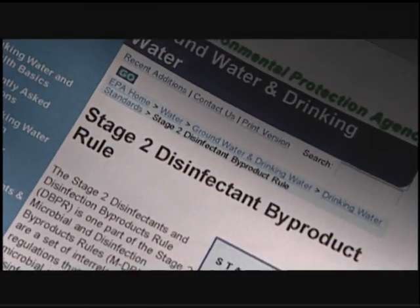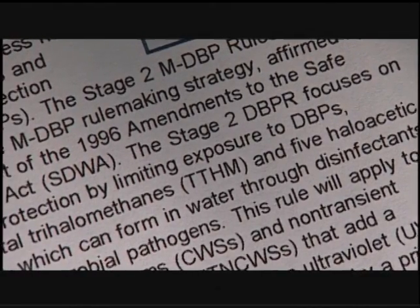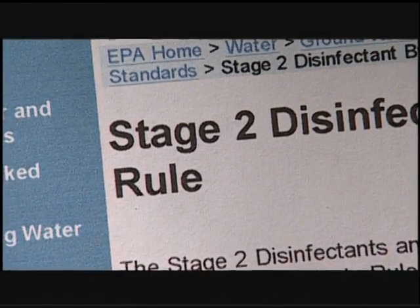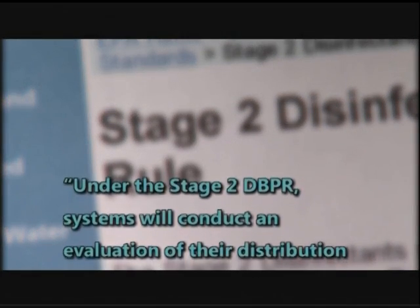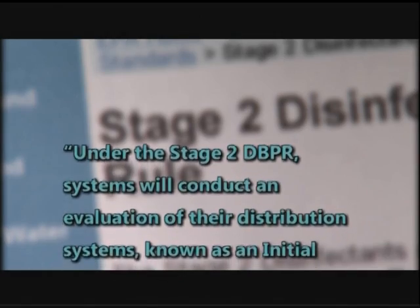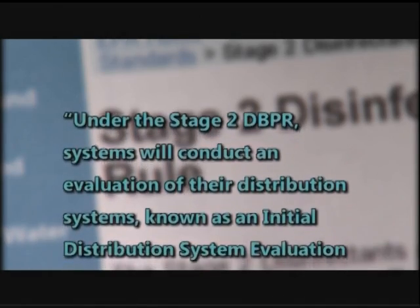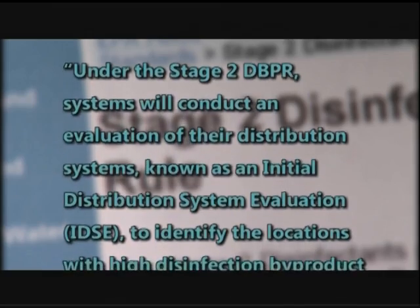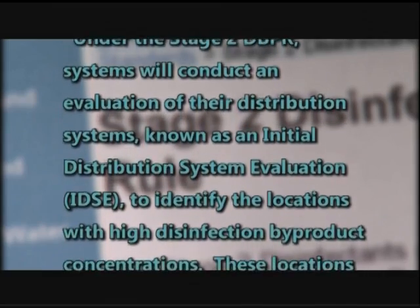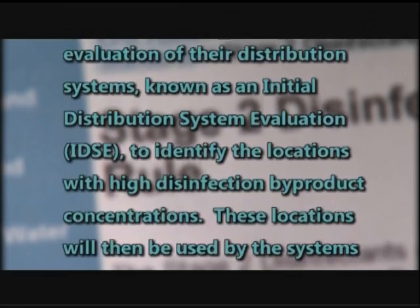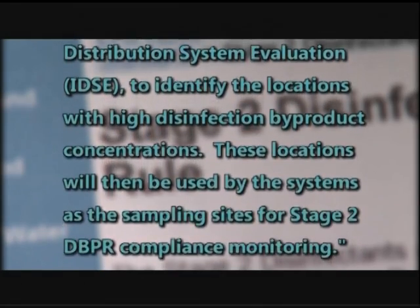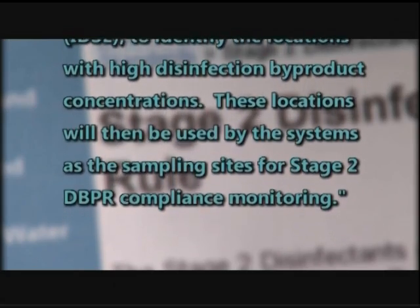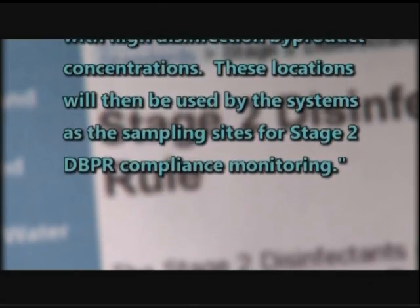The Stage 2 Rule, put in place in 2006, builds upon the earlier rule and works to provide additional public health protection from DBPs. According to the EPA, under the Stage 2 DBPR, systems will conduct an evaluation of their distribution systems, known as an Initial Distribution System Evaluation, to identify the locations with high disinfection byproduct concentrations. These locations will then be used by the systems as the sampling sites for Stage 2 DBPR compliance monitoring.